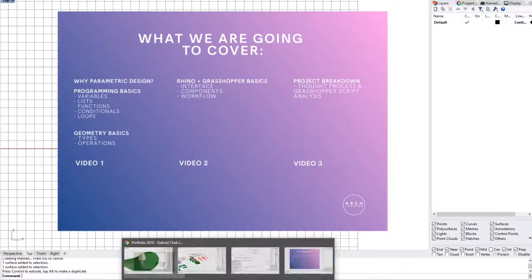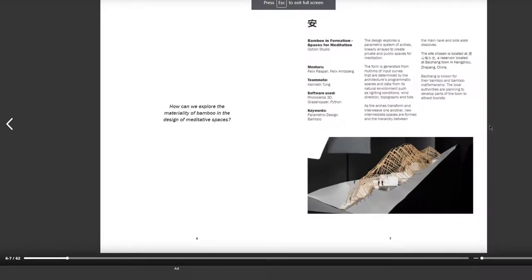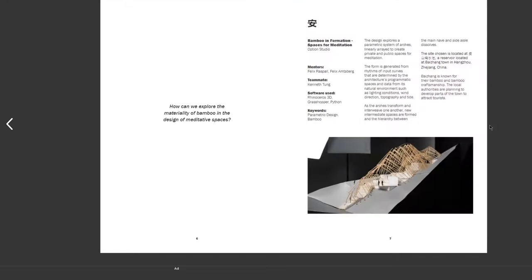I would like to show you a presentation that me and my friend have done. This project is called Bamboo Information Spaces for Meditation. Together with my friend, we went through the process in three parts: in the first stage, we discovered the materiality of bamboo; secondly, we explored the process of parametric design in form-finding; and in the third stage, we created our programs within the building by rationalizing the parametric design from the second stage.